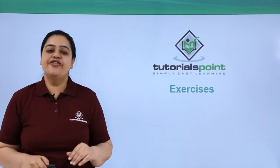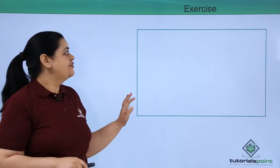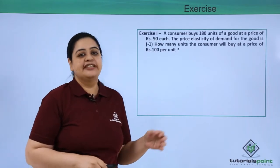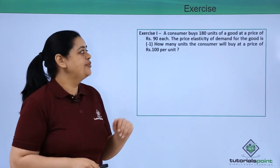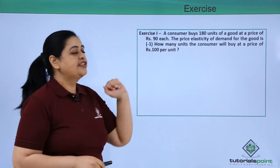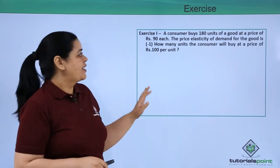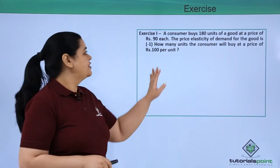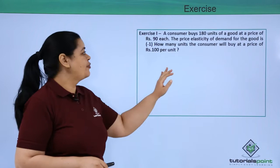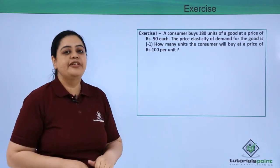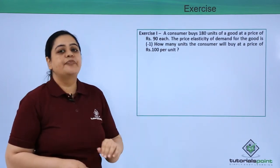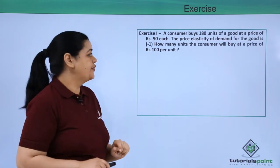Now let's quickly do a few exercises. The first exercise: a consumer is buying 180 units of a good at a price of Rs. 90 each. The price elasticity of demand for the good is -1. How many units will the consumer buy at a price of Rs. 100 per unit?